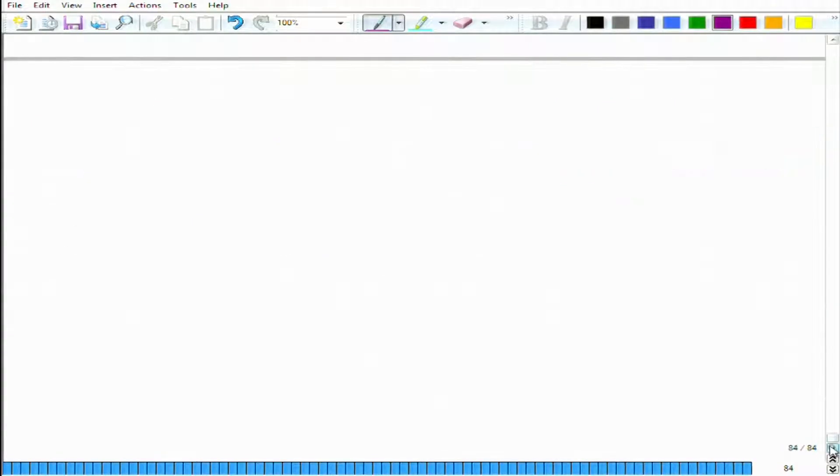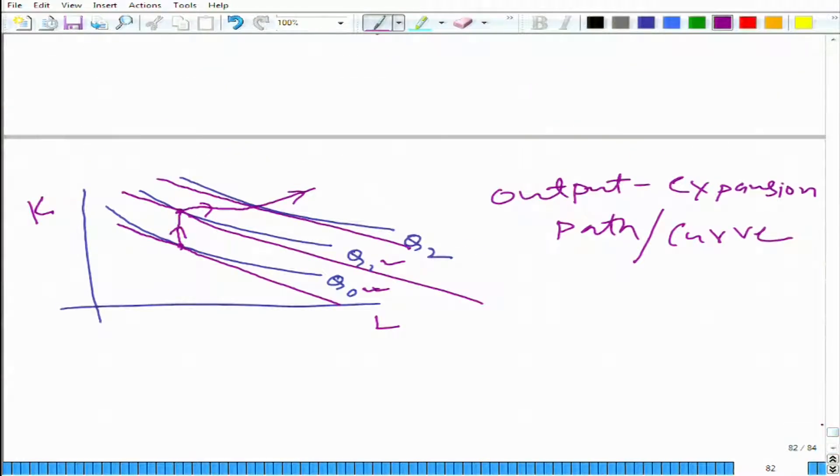Here we have taken r as the rental per unit of capital per unit of time and w as wage per unit of labor per unit of time. We have kept r and w fixed, and we are changing from q0 to q1 to q2. We are seeing where the optimal bundles lie and drawing a curve passing through all those optimal bundles - that is how we are getting the output expansion path.